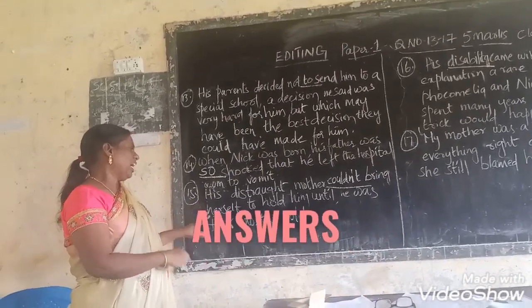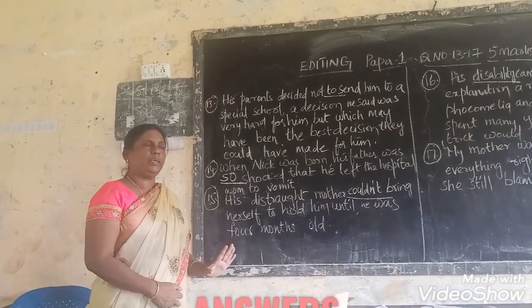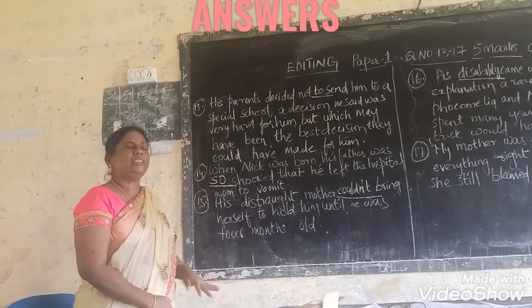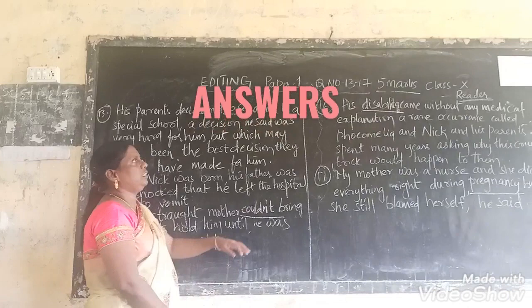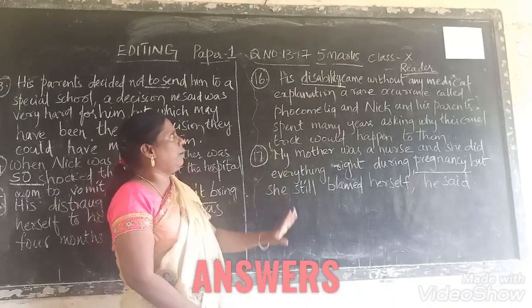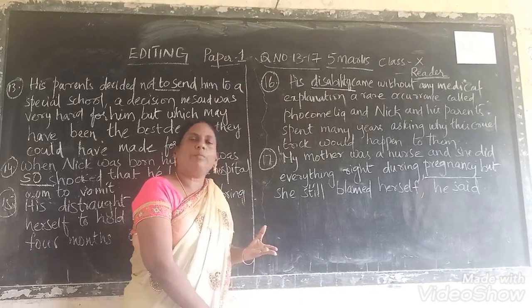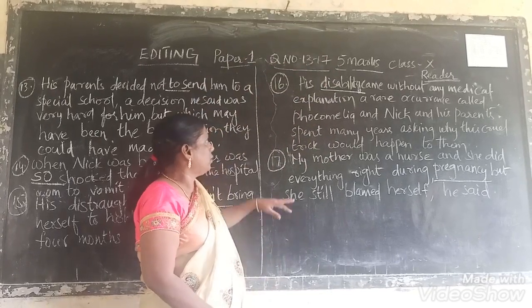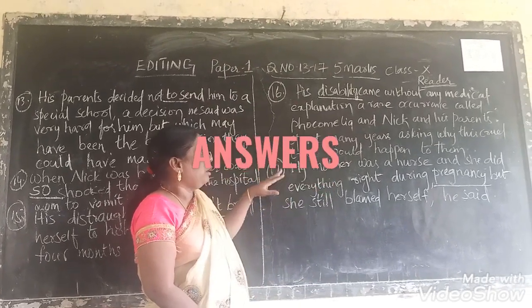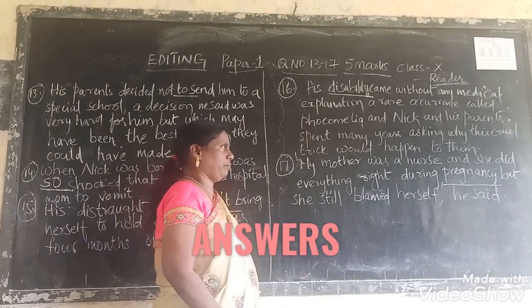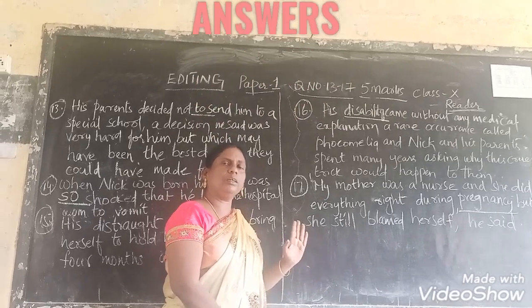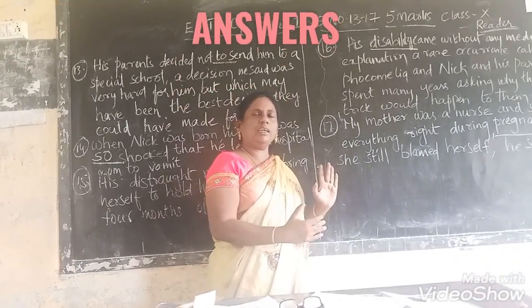For sentence 15: 'His distraught mother can't bring herself to hold him until he was 4 months old.' Looking at the passage, the verb should be in past tense — instead of 'can't', it should be 'couldn't'. For sentence 16: 'His disabled came without any medical explanation' — it should not be 'disabled' but the noun form: 'disability' — his disability. For sentence 17: 'she did everything right during pregnant' — it should be the noun form 'pregnancy'.